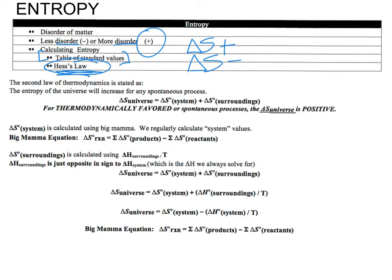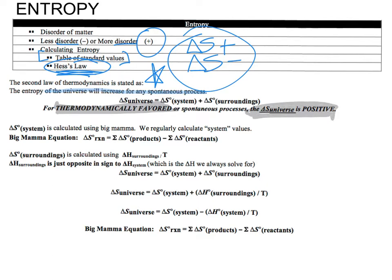Hess's Law basically states that these things are state functions, and we can determine what delta H and delta S is in multiple fashions. Another thing to know is what the second law of thermodynamics states. We know the first one has to do with conservation of energy, and the second law has to do with the universe increasing in disorder. It states that the entropy of the universe will increase for any spontaneous process.